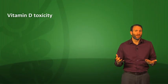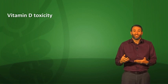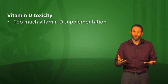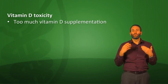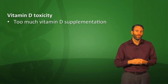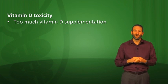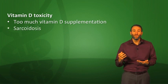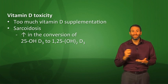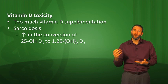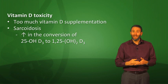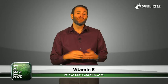What if you take too much vitamin D? This doesn't occur from getting too much sun — it really occurs when patients take too much vitamin D supplementation. Patients may become hypercalcemic, which can lead to stones, bones, groans, and psychiatric overtones. One other rare instance of vitamin D toxicity can arise from sarcoidosis, where macrophages present in granulomas increase the conversion of 25-hydroxyvitamin D to 1,25-dihydroxyvitamin D. So patients with sarcoidosis might actually have hypercalcemia because of this.